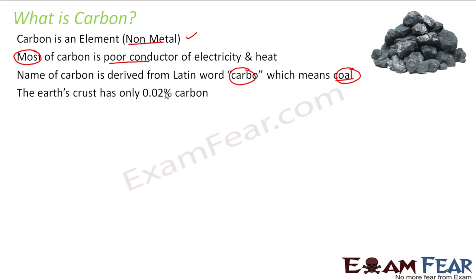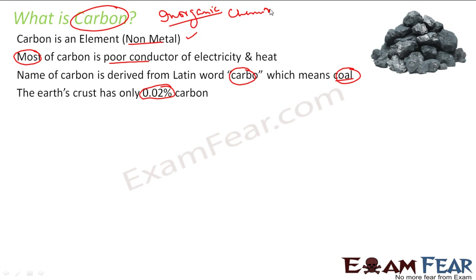You will be surprised to know that Earth has only 0.02% of carbon, and yet we have a separate chapter — actually, a whole branch — for carbon. That branch is called organic chemistry, and it deals with carbon compounds. We have only 0.02% of carbon in the Earth's crust, but it has a huge importance in our daily life.